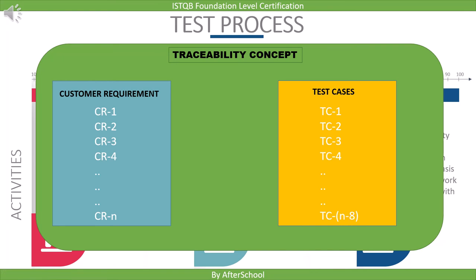Now comes the important question: how will you provide the test case for customer requirement 4? It is humanly not possible to trace test cases to the requested customer requirement if you have thousands of requirements. To solve this problem, we have traceability. During traceability, we develop a virtual bi-directional link between requirements and test cases using some tools.